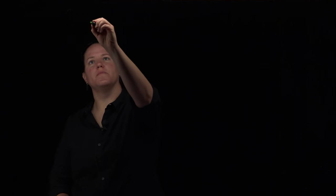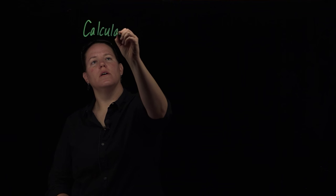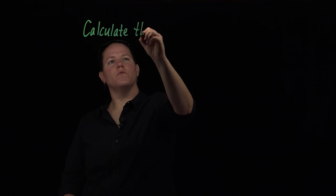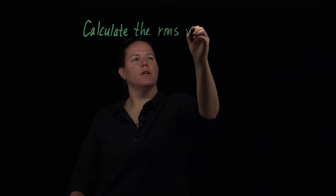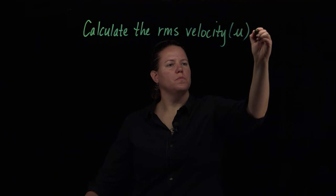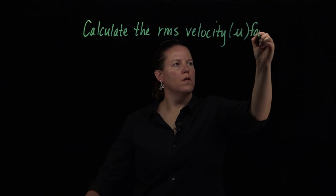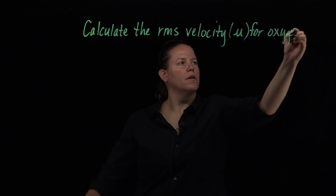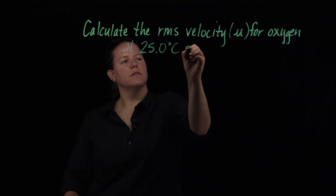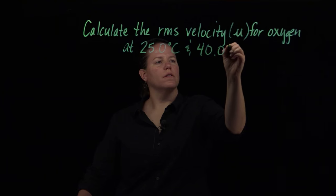Now we're going to do a couple of different temperatures. Let's calculate oxygen at a couple of different temperatures because this formula still works for the same molecule at multiple temperatures. Calculate the root mean square velocity, abbreviated as μ, for oxygen at 25°C and 40°C.